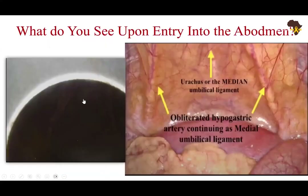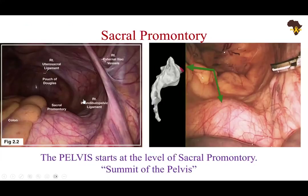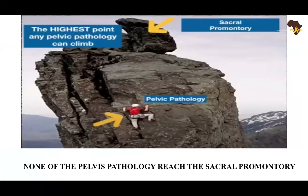On entry you will see these three structures. Now moving on — we've done the anterior abdominal wall; let's look at the posterior wall. We have entry into the pelvis at the sacral promontory, the IP ligament, and the pouch of Douglas. The pelvis starts at the sacral promontory — the summit of the pelvis. None of the pelvic pathology crosses the sacral promontory, so this is our pinnacle — the highest point any pelvic pathology can climb. We discuss and deal with the pelvic pathology below this level.